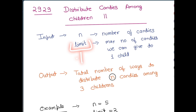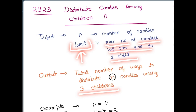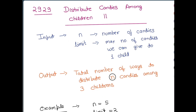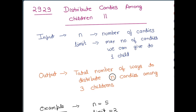This limit variable is the maximum number of candies we can give to one child. So we have three children and we need to distribute n candies among them such that no child gets more than the limit number of candies.